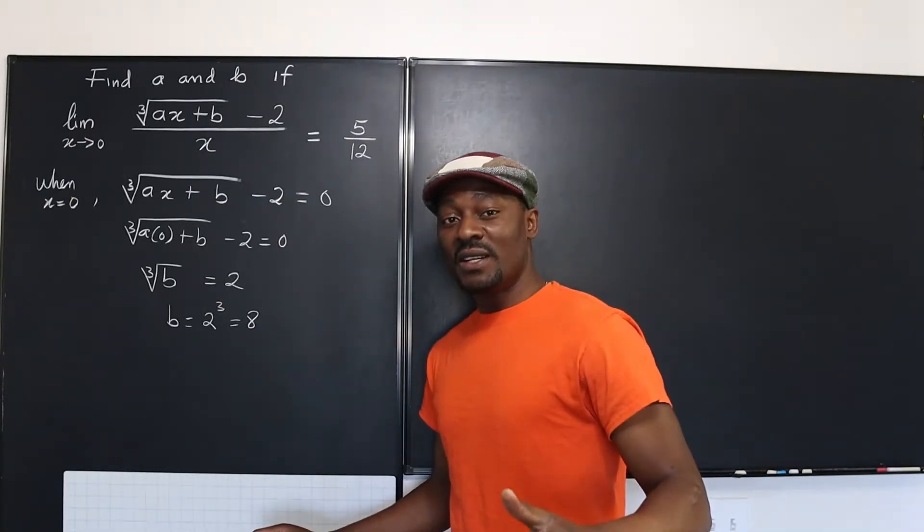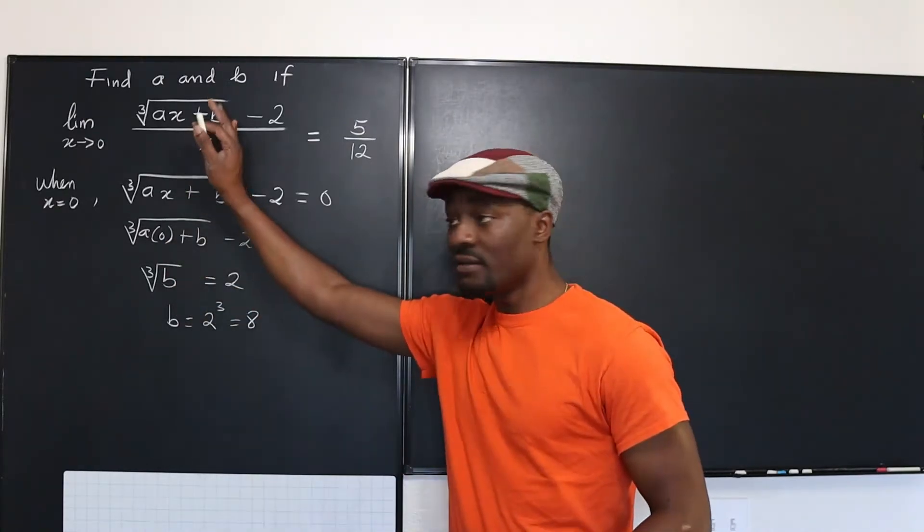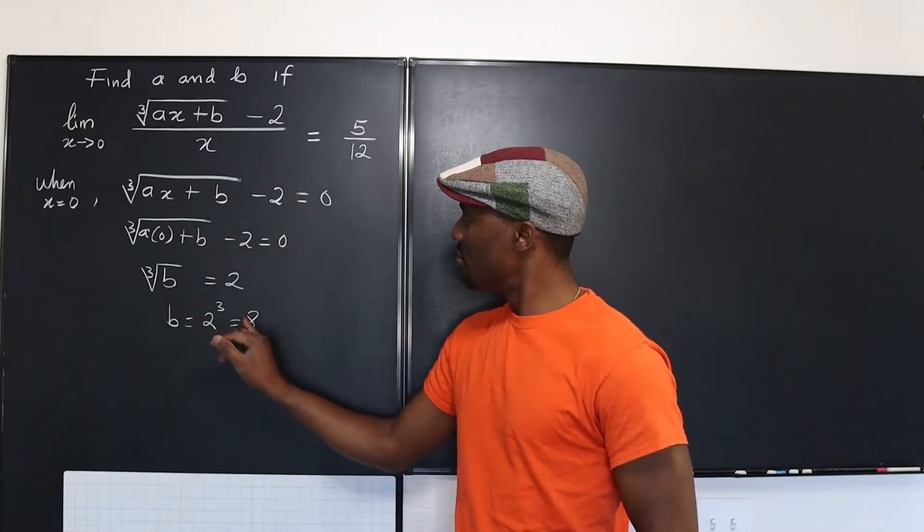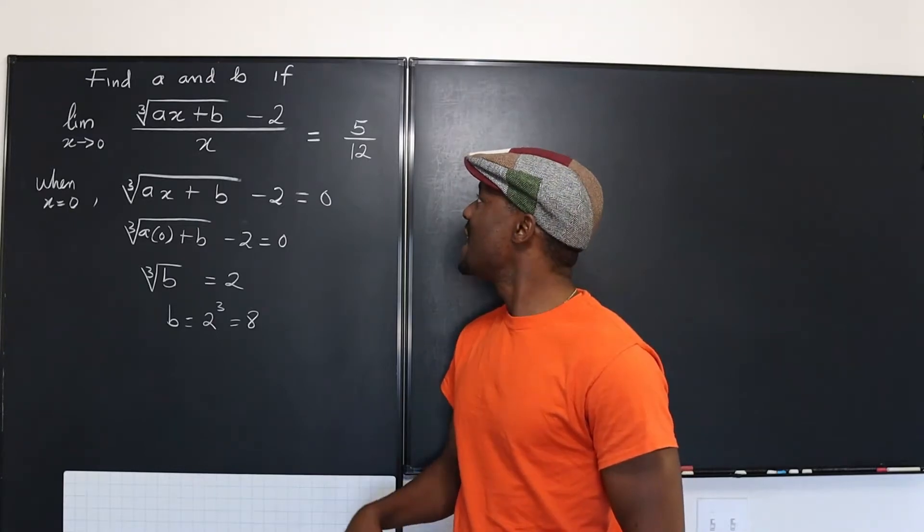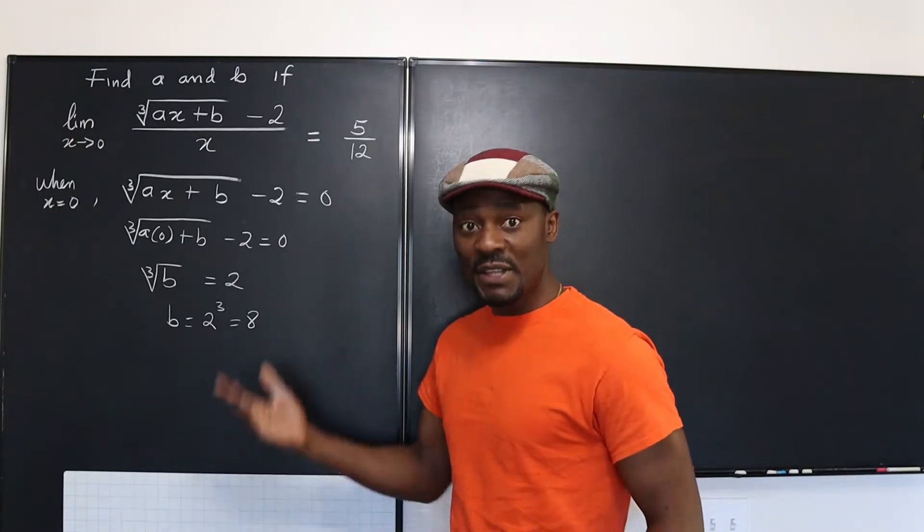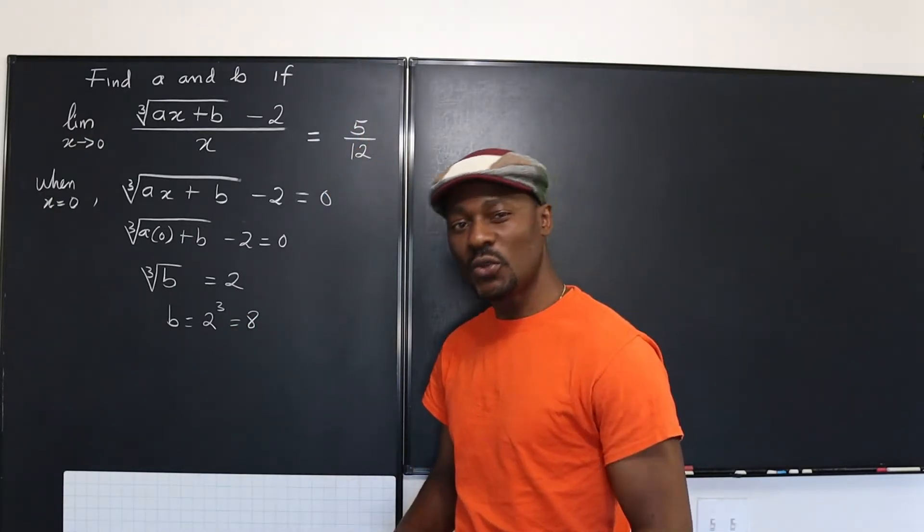So now that we understand that we can apply L'Hopital's rule to it on the basis of what we have done, we're just going to rewrite this problem, put B equals eight, just to make things a bit easy. And we apply L'Hopital's rule to the function and then see, to the limit and then see how we relate it to five over twelve. So let's start with that.